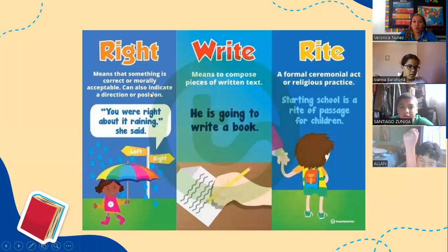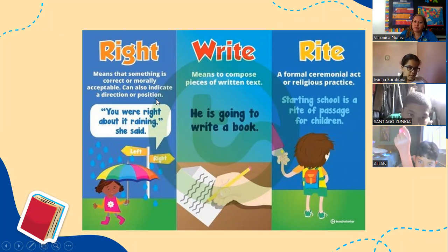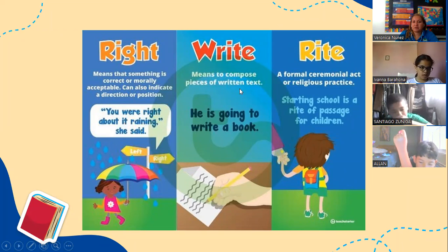Right means that something is correct or morally acceptable. Can also indicate a direction or position. This is my right hand. You were right about it raining. See, left, right, position. Write means to compose pieces of written text. He's going to write a book. Rite is a formal ceremonial act or religious practice. Starting school is a rite of passage for children.